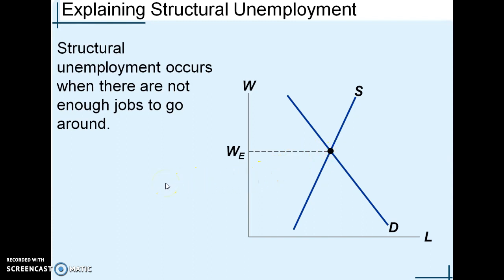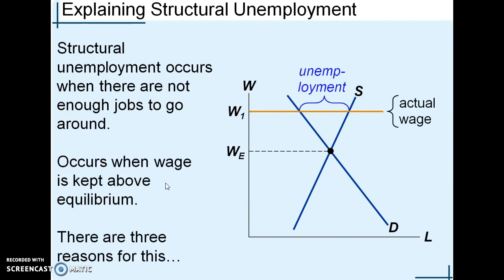At equilibrium wage there's no unemployment because there's no restriction. But there are three reasons why a restriction could be placed in the marketplace. Basically, the restriction puts wage above equilibrium. When wage is above equilibrium, you create a surplus — quantity supplied outweighs quantity demanded — and a surplus of labor shows up as unemployment.